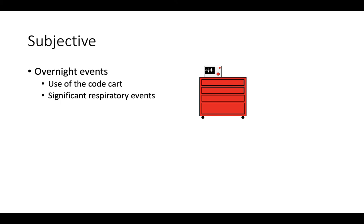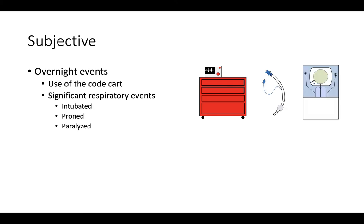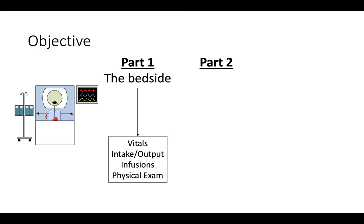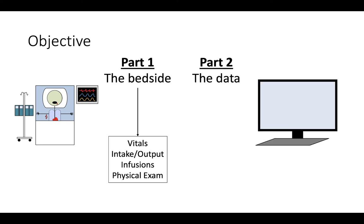Examples of relevant overnight events include any use of the code cart, significant respiratory events including whether the patient needed to be intubated, proned, or paralyzed, bleeding events, any procedures, and additions or changes to vasoactive medications. Following overnight events, the subjective portion ends by presenting the patient and nurse's recap of the night and early morning. After the subjective, transition to the objective, which can be broken down into two parts. Part 1 is information gleaned from being at the bedside: vitals, intake and output, current infusions, and physical exam. Part 2 is data gleaned from the computer and medical record: labs, imaging, and microbiology.